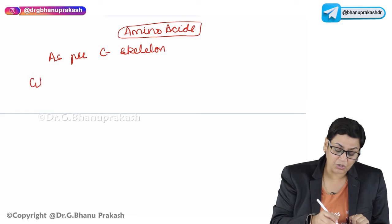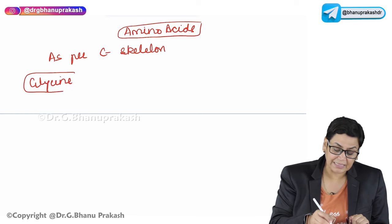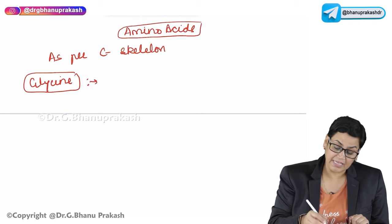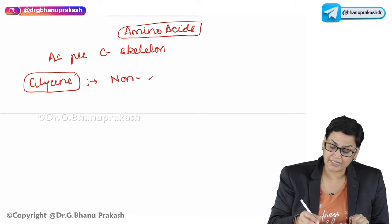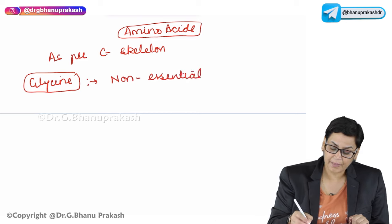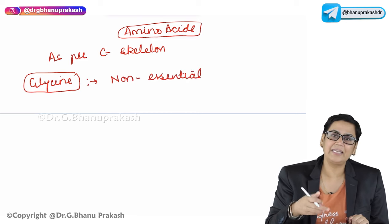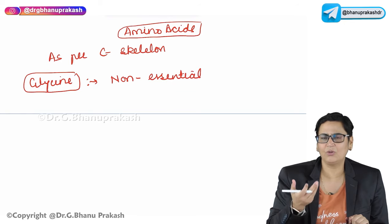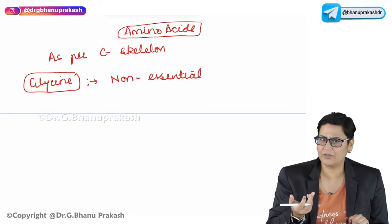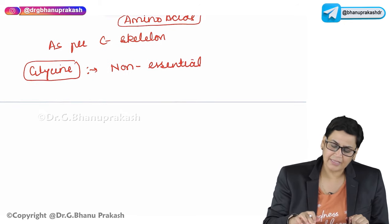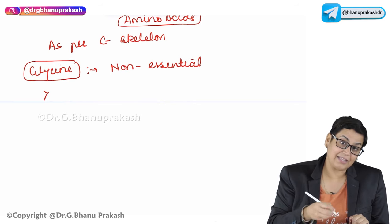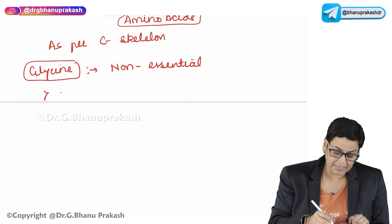A very important non-essential amino acid is glycine — even though it is non-essential. Non-essential amino acids are the ones which can easily be synthesized in the body; they don't have to be provided from the outside diet.